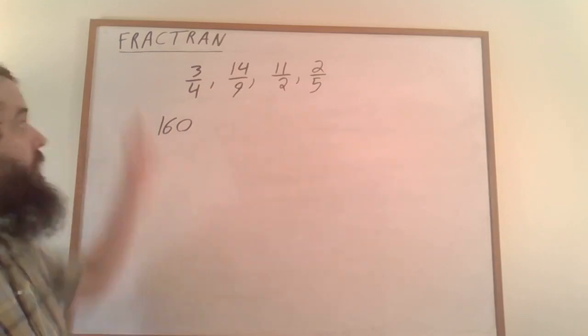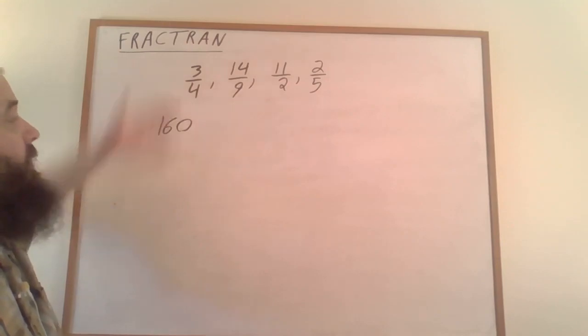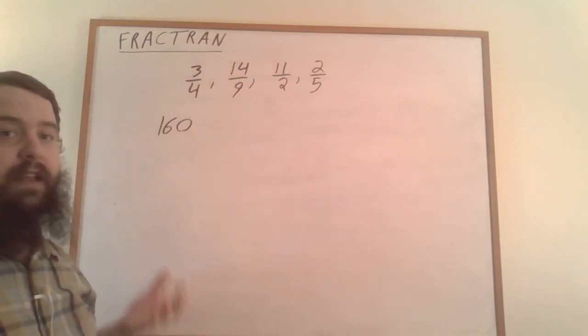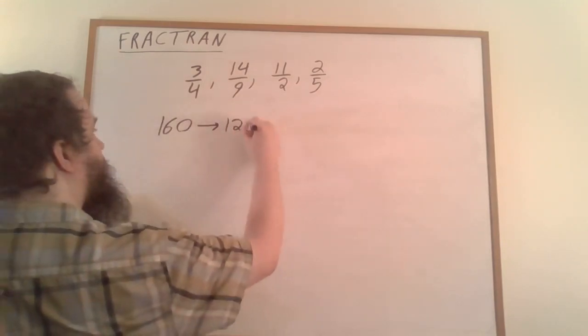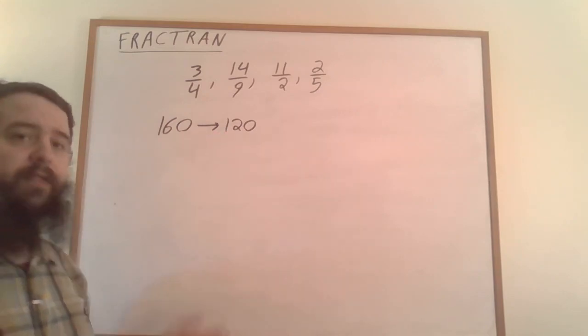Going through fraction by fraction, the first fraction works. 160 is divisible by 4, so we can multiply by 3/4 to get a natural number. We call this current number the program state, and it stores all the information the program is tracking.